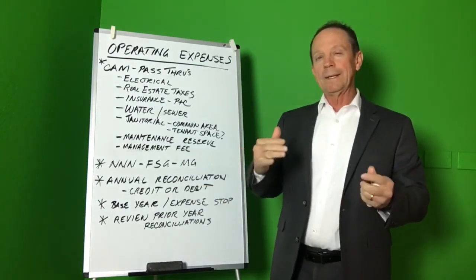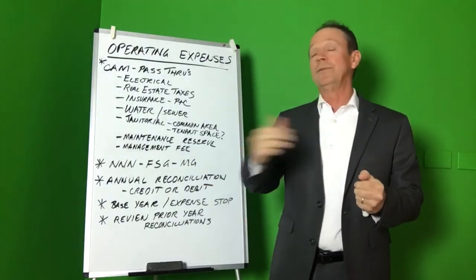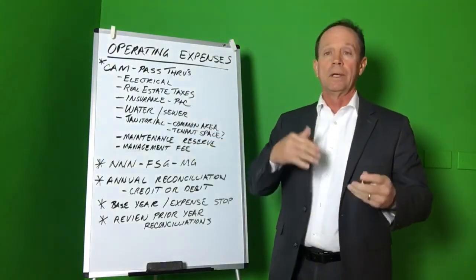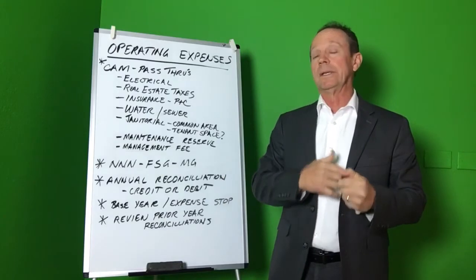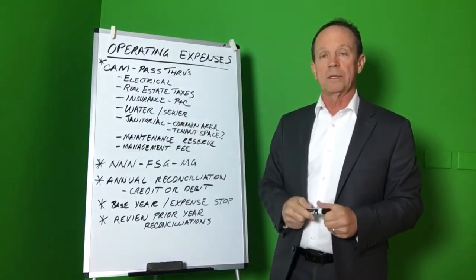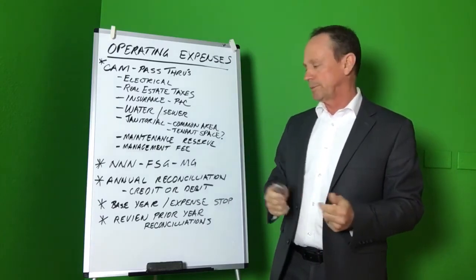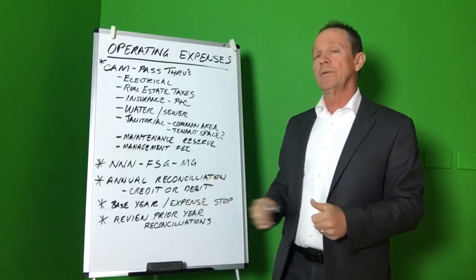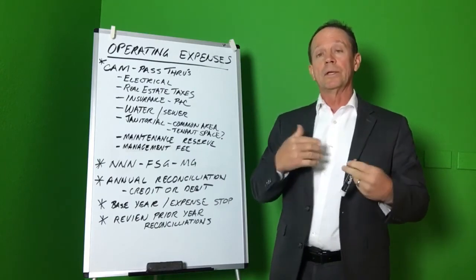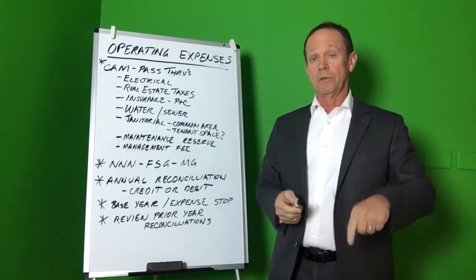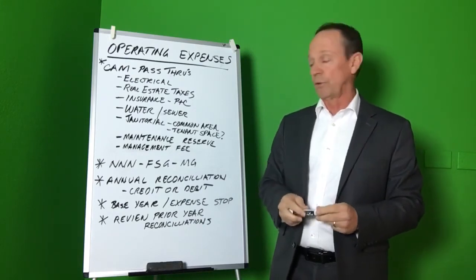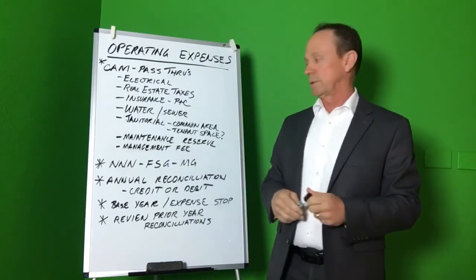The landlord can't estimate exactly in advance what all of these costs are going to be because, as you know, the taxes always change, insurance costs always change, the water bill might go up slightly — that always changes. So they're always going to provide an annual reconciliation at the end of the year and either give a bill to the tenant or give them a credit for future payment of operating expenses.